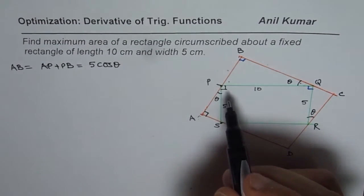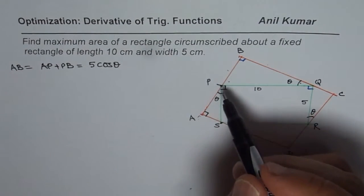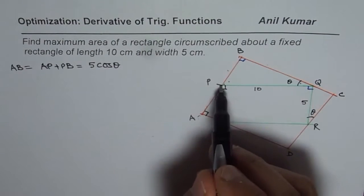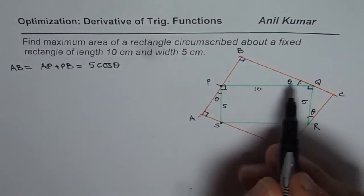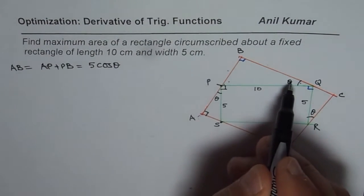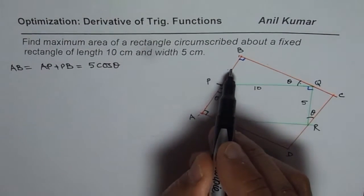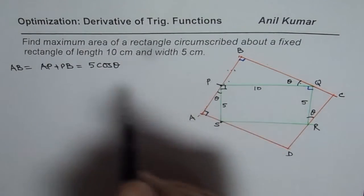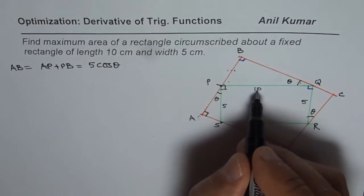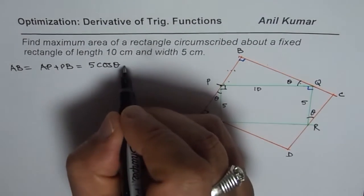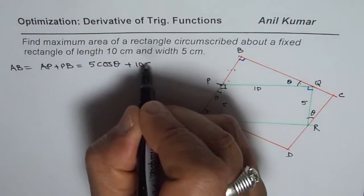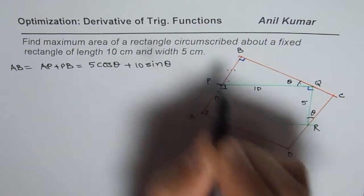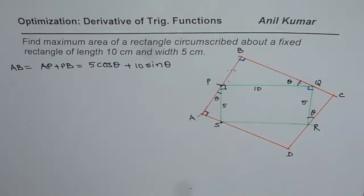On the other hand, PB is the side opposite to theta in this particular triangle. So it is sine: 10 times sine theta. Therefore AB equals 5 cos theta plus 10 sin theta. This concept, I hope, is absolutely clear.